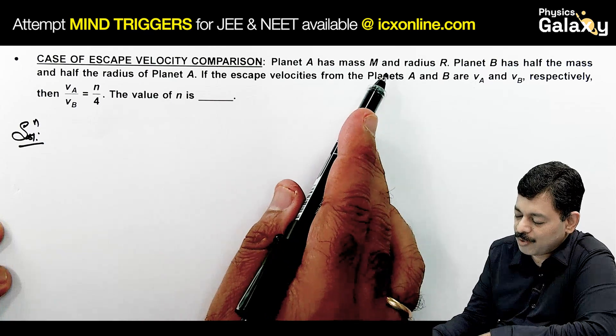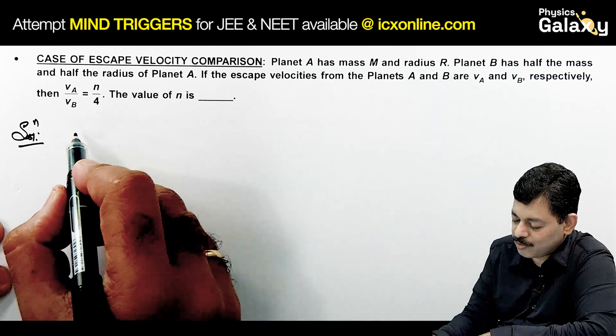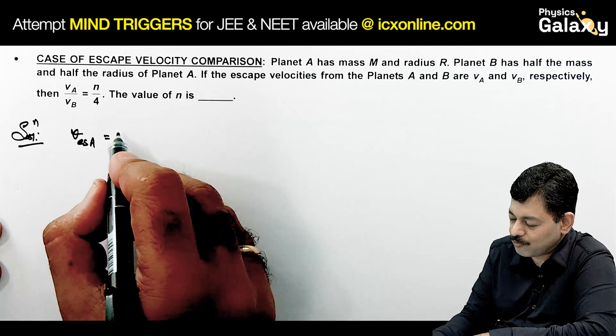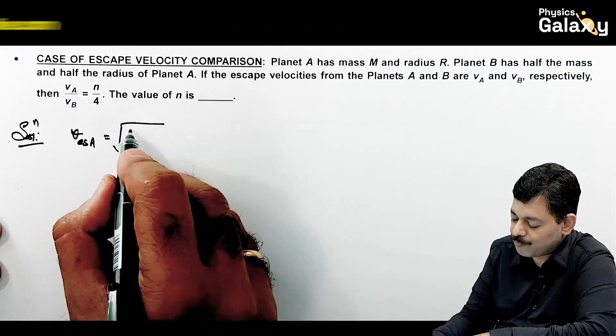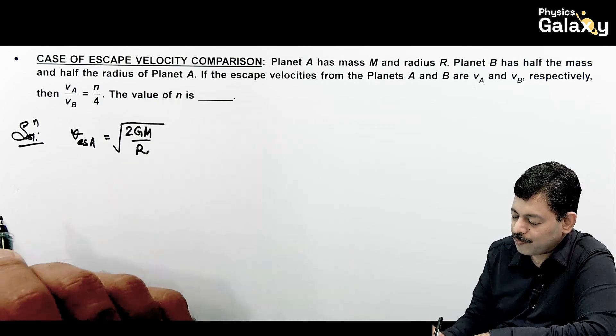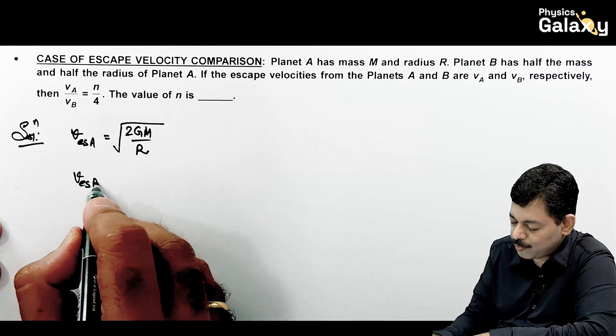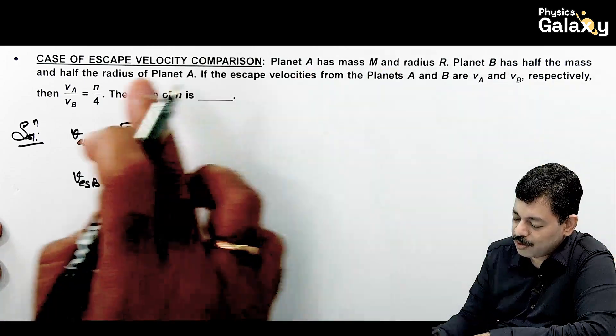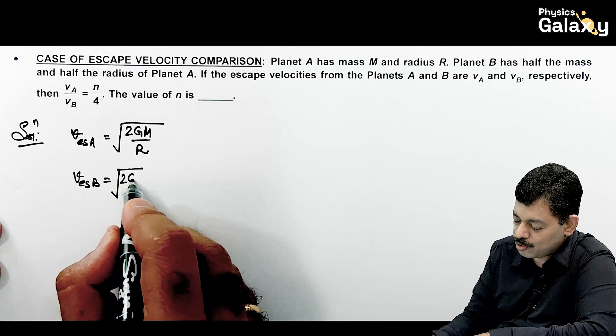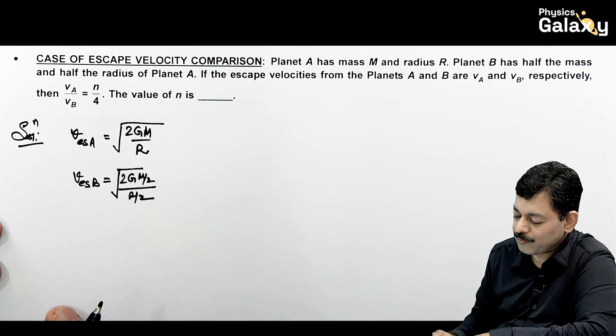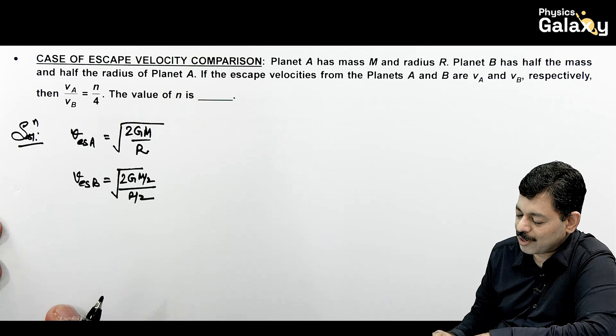Planet A has mass m and radius r. The escape velocity on planet A is √(2gm/r). Escape velocity for planet B—planet B has half the mass and half the radius, so we put m/2 and r/2 in the equation.